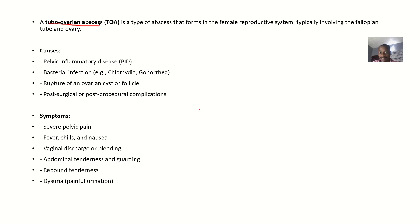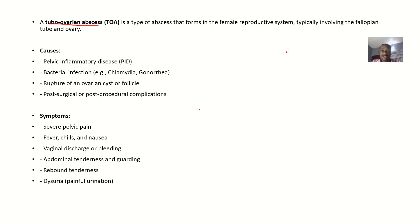The tubo-ovarian abscess is a type of abscess that forms in the female reproductive system, typically in the fallopian tube and the ovaries. So 'tubo' refers to the fallopian tube, and 'ovarian' refers to the ovary. An abscess can form in these two structures, and the collection of abscesses in both areas is what we call the tubo-ovarian abscess.